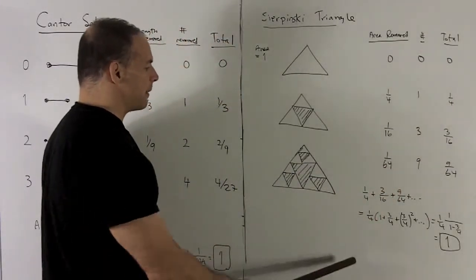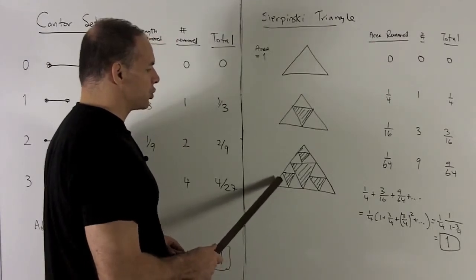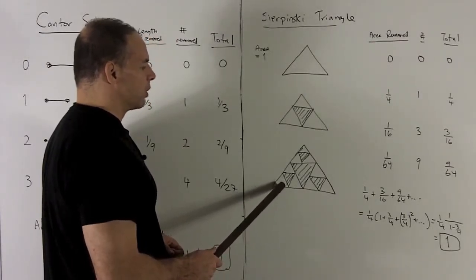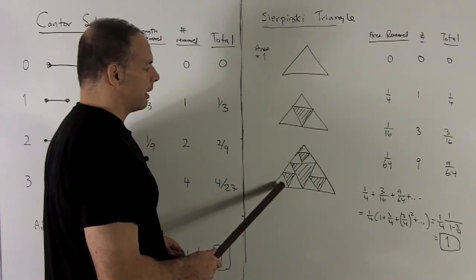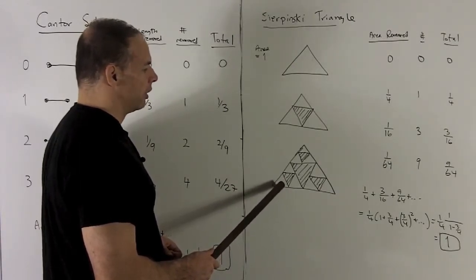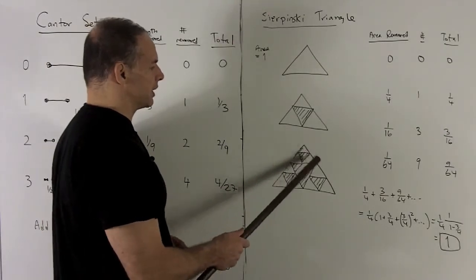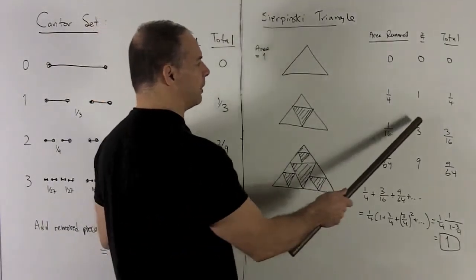We do it one more time. I pull the middle third out of this triangle. Well, that's going to be a quarter of one sixteenth, which is one sixty-fourth. Then how many of these are there? Well, here we can just count: one, two, three, four, five, six, seven, eight, nine. But it's just going to be our previous number times three, so we get nine. Total area removed: nine sixty-fourths.